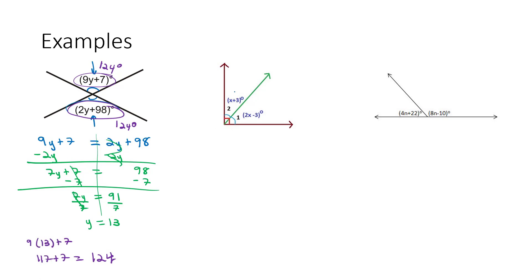Second example, we've got two angles, x plus 3 and 2x minus 3. But we notice they make that perfect right angle. These angles are complementary. Complementary means that they add to equal 90 degrees.